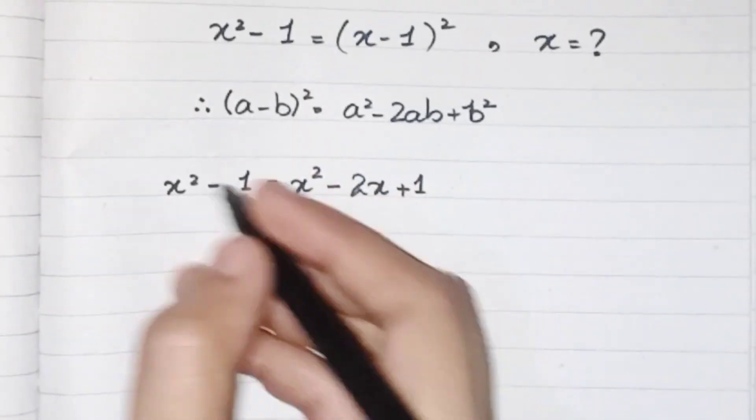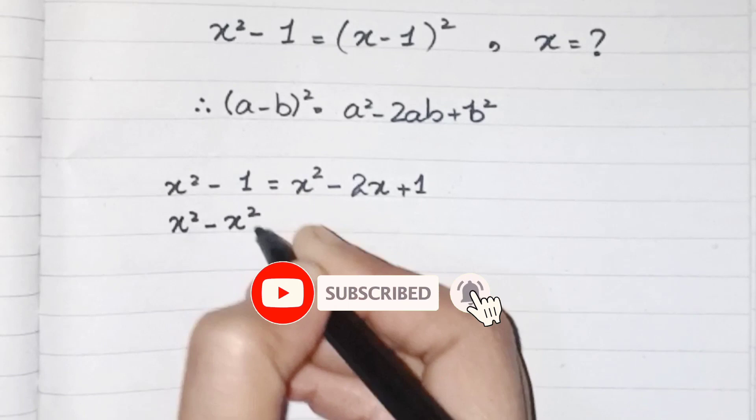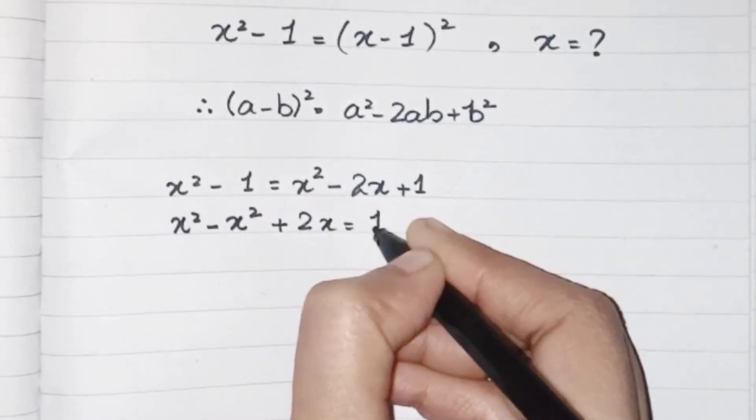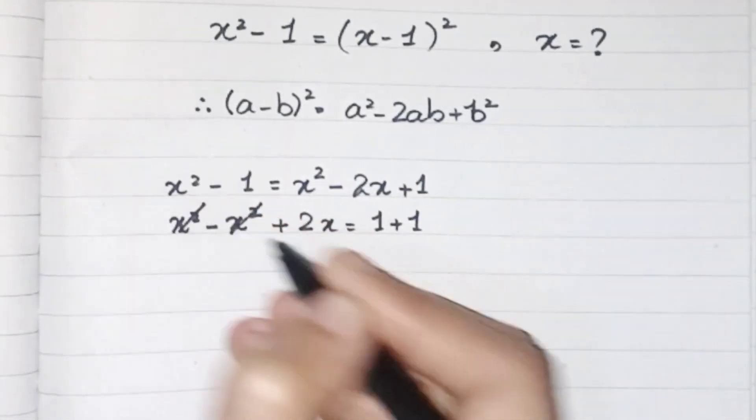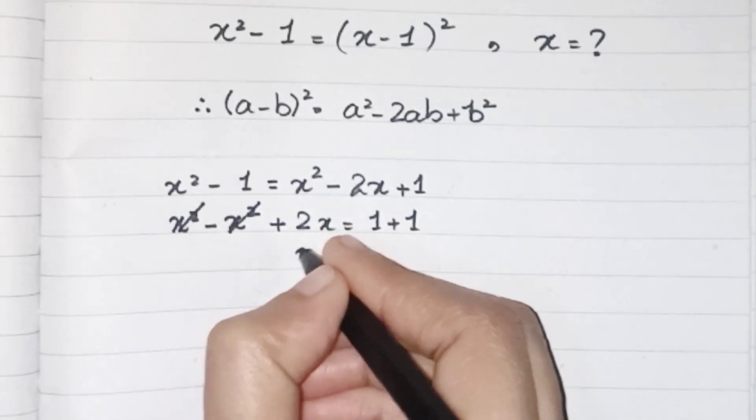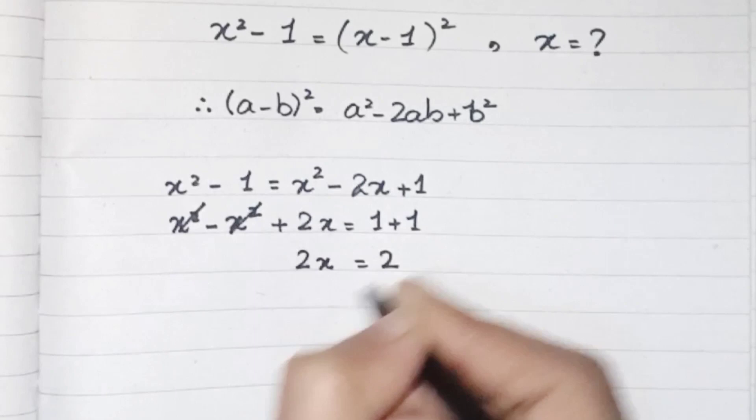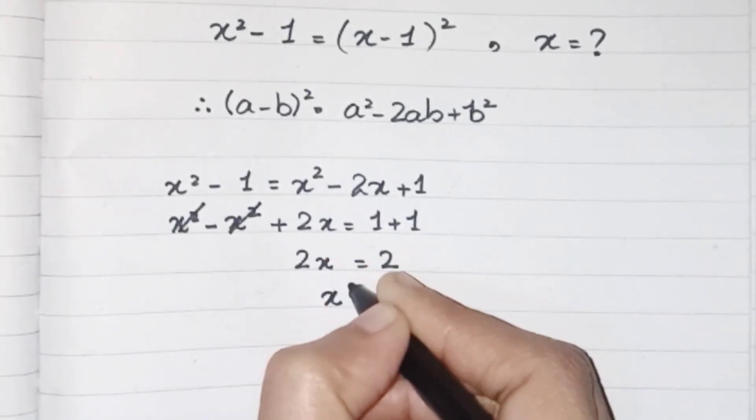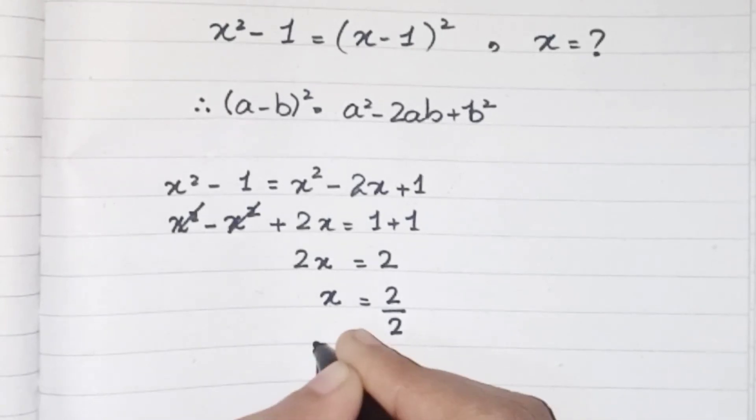Now we have to move all the variable terms to one hand and all the constants to the other hand. Plus x² and minus x² cancel out each other. The remaining terms are 2x = 2. To get the value of x, we move this 2 which is multiplying by x to the other hand, so it will be divided by 2, and the value of x will be 1.